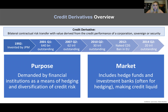The reason credit derivatives exist is because they're demanded by financial institutions to hedge and diversify credit risk. The idea is that you can isolate credit risk exposure — if you're buying a bond, the bond also has rate exposure, but here you're isolating just the credit aspect of the corporate bond, sovereign, or security, getting isolated credit risk that you can't get exposure to any other way.